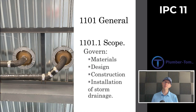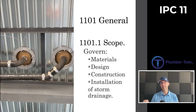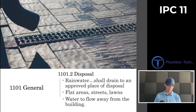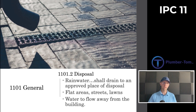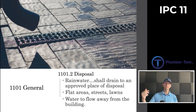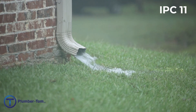Let's get into the code. We begin with Section 1101, General. 1101.1 gives us the scope, stating that the provisions of this chapter shall govern the materials, design, construction, and installation of storm drainage. 1101.2 talks about disposal of rainwater, specifically stating that rainwater shall drain to an approved place of disposal — flat areas, streets, lawns — but definitely the water needs to flow away from the building.